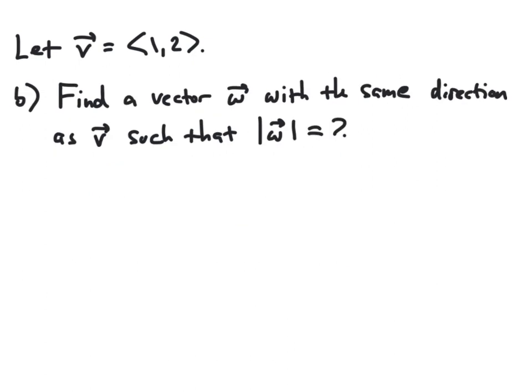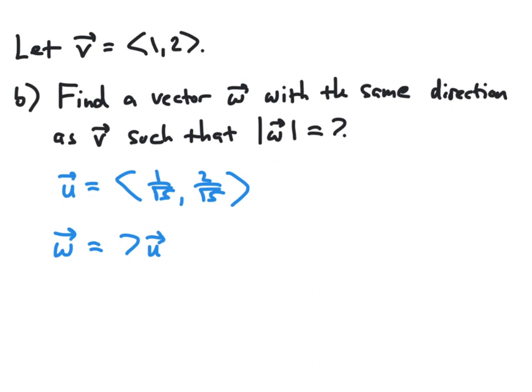Next, we want to find a vector with the same direction as v but with the magnitude of 7. We've already found a unit vector which has the same direction as v: components 1 over square root of 5 and 2 over square root of 5. We know this has the same direction as v but has a magnitude of 1. If we want a vector in this same direction with a magnitude of 7, we can simply scale this unit vector by 7, making w equal to 7 times u.